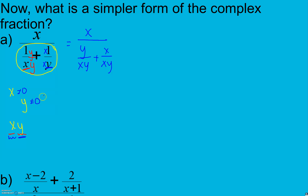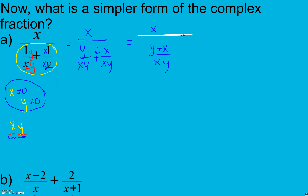We also want to check any restrictions on our domain. Here, x cannot equal zero and y cannot equal zero. Once I have a common denominator, I add my numerators, so I have y plus x. Now I've simplified my denominator and my numerator is just an x. To get rid of division, I switch to multiplication by the reciprocal of my denominator.